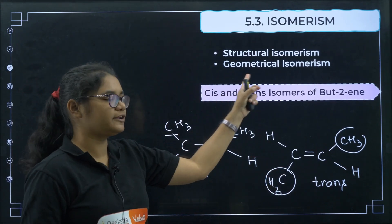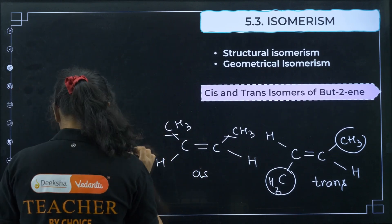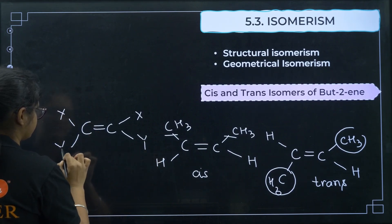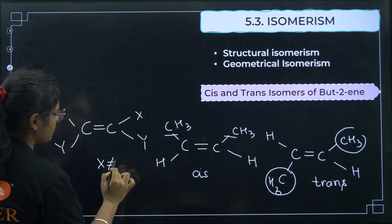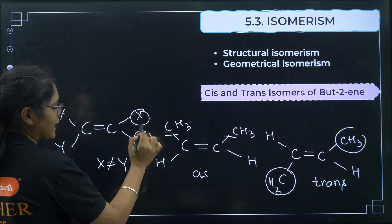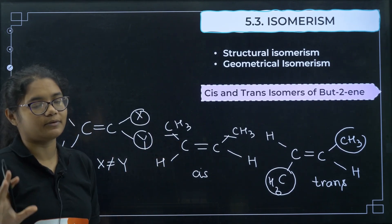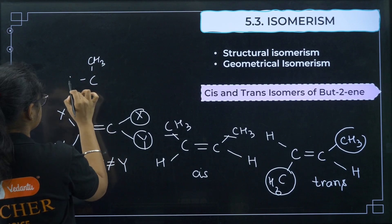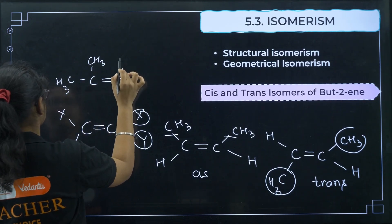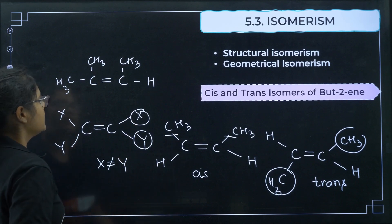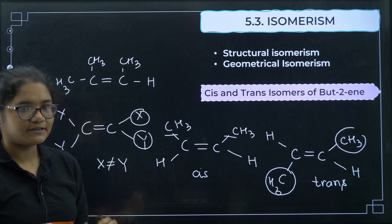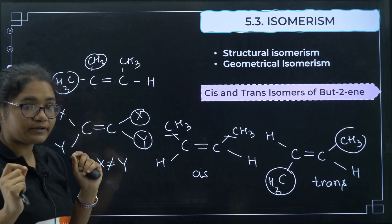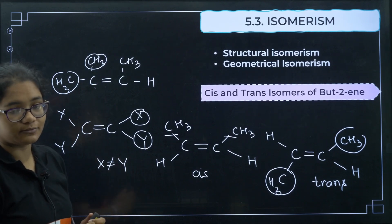The condition for geometrical isomerism is that the two groups attached to each doubly-bonded carbon must be different (x ≠ y). If two groups on the same carbon are identical, geometrical isomerism is not possible. The two groups attached to each carbon of the double bond must always be different.